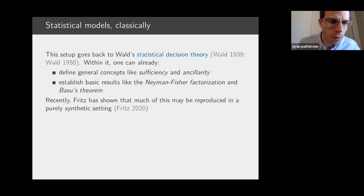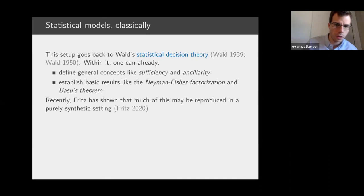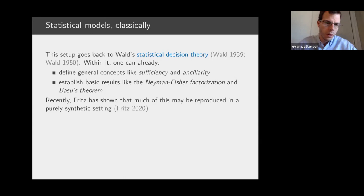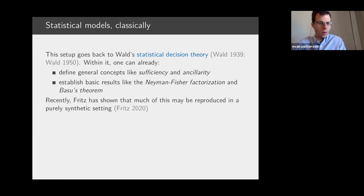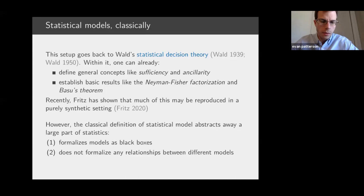This simple formalism goes back at least to Abraham Wald and his statistical decision theory, the early framework to formalize theoretical statistics in a general way. Within this formalism, you can already define concepts like sufficiency and ancillarity and establish basic results such as the Neyman-Fisher factorization criterion or Basu's theorem. Recently, Tobias Fritz has shown that a lot of these definitions and abstract results can be reproduced in a purely synthetic setting of Markov categories, which is quite remarkable.